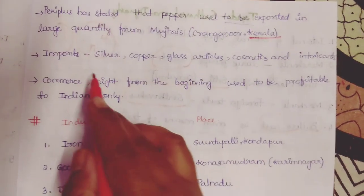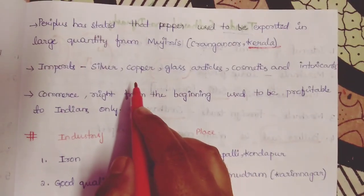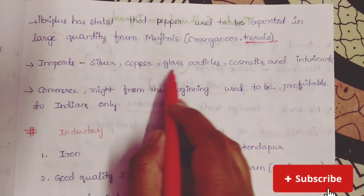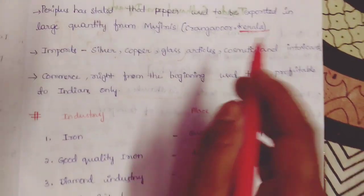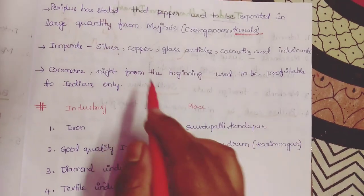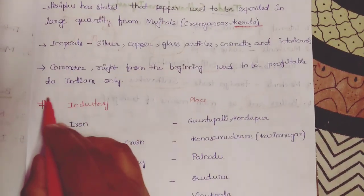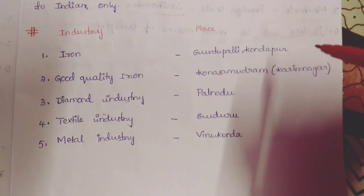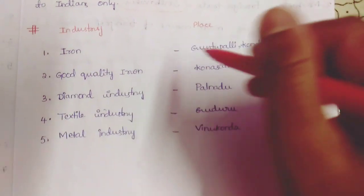The goods imported by the Satavahana dynasty from other countries are silver, copper, glass articles, cosmetics, and intoxicants. From literary sources, it is known that commerce used to be profitable to Indians only. Here are some industries and their locations.